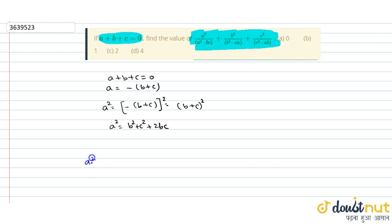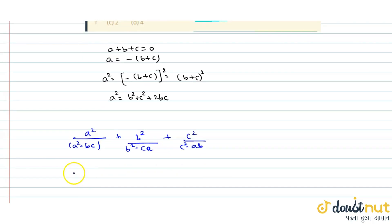If we see here, we have given that a square upon a square minus bc plus b square upon b square minus ca plus c square upon c square minus ab. This means a square is equal to b square plus c square plus 2bc.